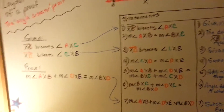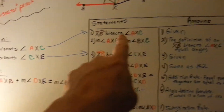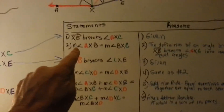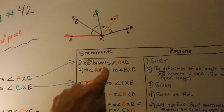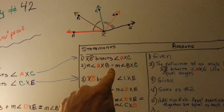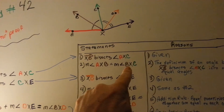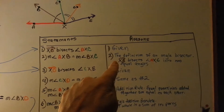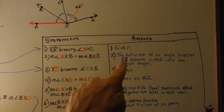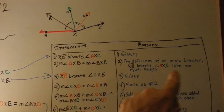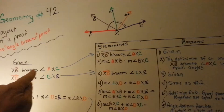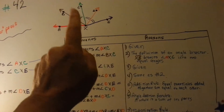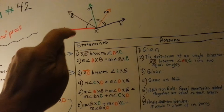So we list our given as our first statement and reason. We have the measure of the red and brown angle — axb — is equal to the measure of the brown and green angle — bxc. The reason we state is the definition of an angle bisector: ray xb bisects angle axc into two equal angles. Because it was given that the brown one bisects these two, and by the definition of an angle bisector they're equal, we've now proven that these two are equal.